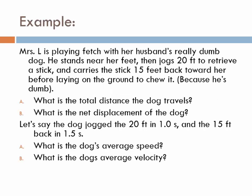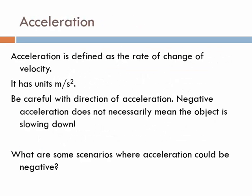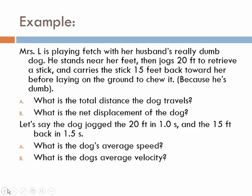Here's just a little example that goes through the difference between all of those things. The first part is talking about my husband's stupid dog, and he is going to run 20 feet to get a stick and then carries the stick back to me only 15 feet. So what is the total distance the dog travels in this example? The total distance the dog travels is the 20 feet that he went forward and then the 15 feet he went back, so that's 35 feet. And then the net displacement of the dog, if he starts here, goes forward 20, comes back only 15, his net displacement is only 5.